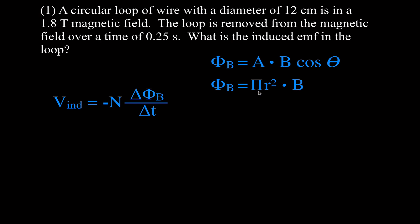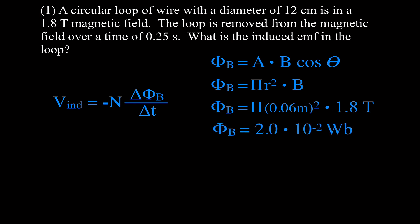It's a circular loop, so the area is pi r squared. The diameter is 12 centimeters, meaning the radius is 6 centimeters, or 0.06 meters — always convert centimeters to meters. Pi times the radius squared times the magnetic field strength gives us the initial magnetic flux of 2.0×10⁻² Webers. After taking the coil out, there's no more magnetic field in the coil, so the final flux is zero.